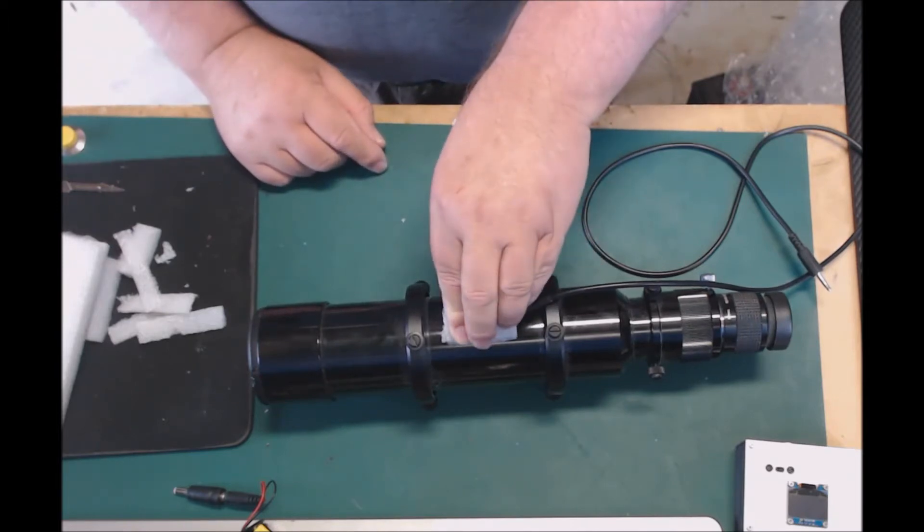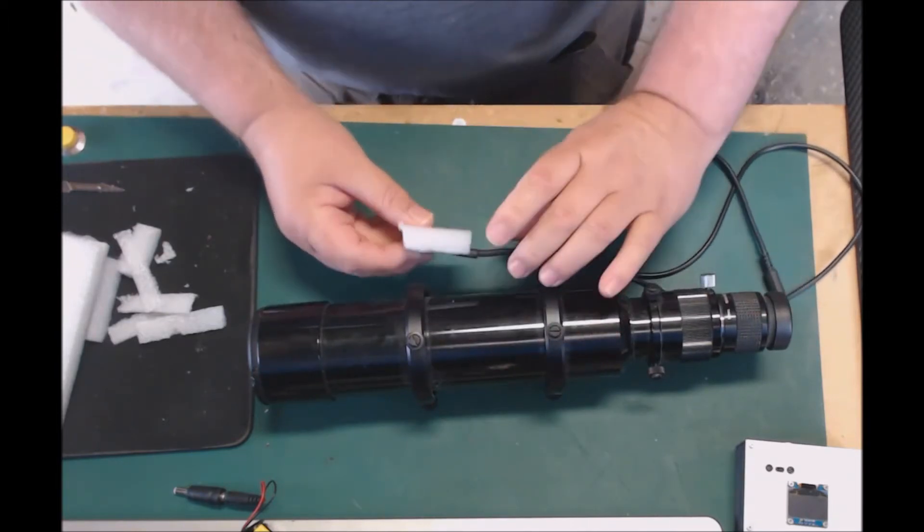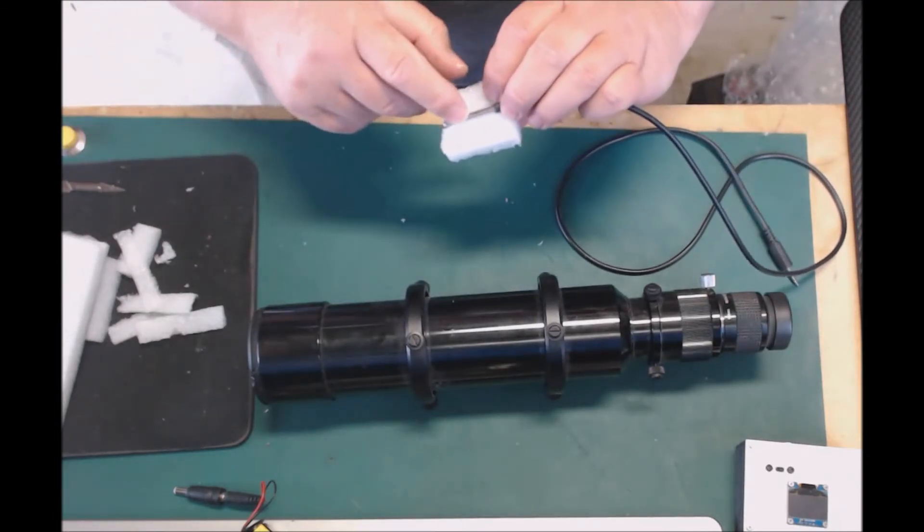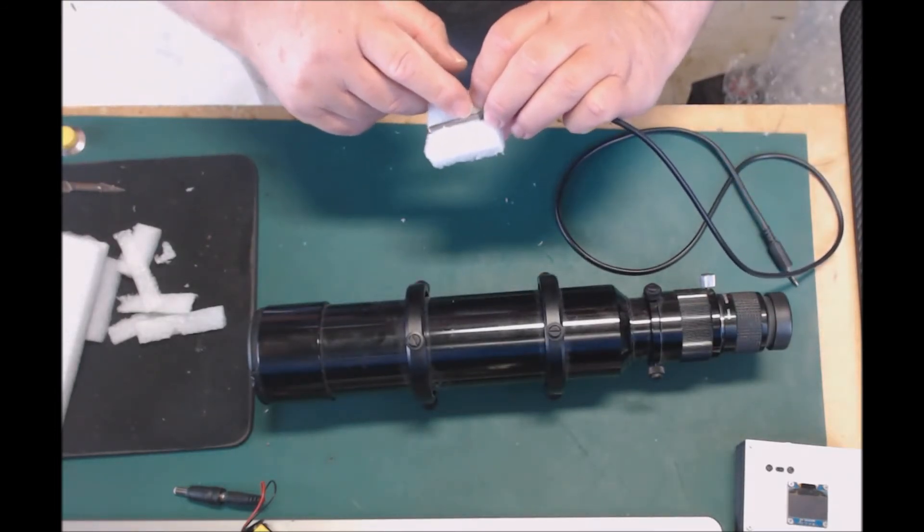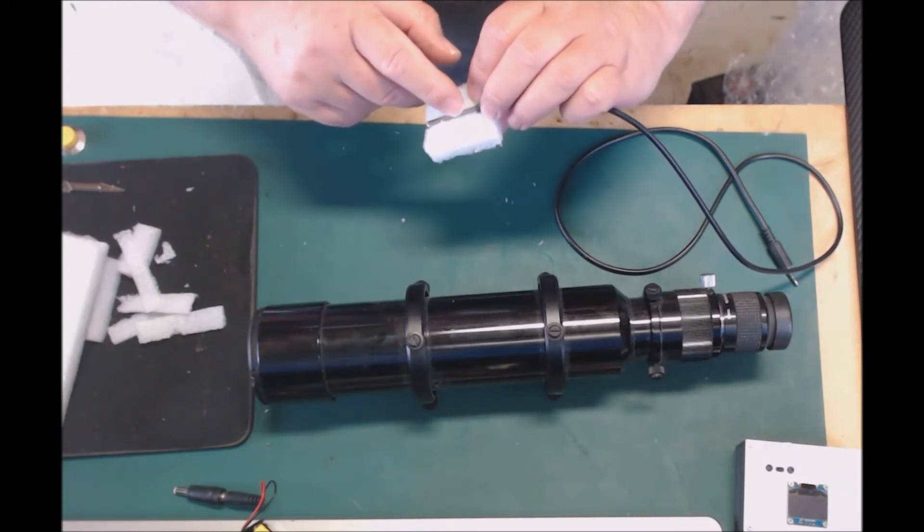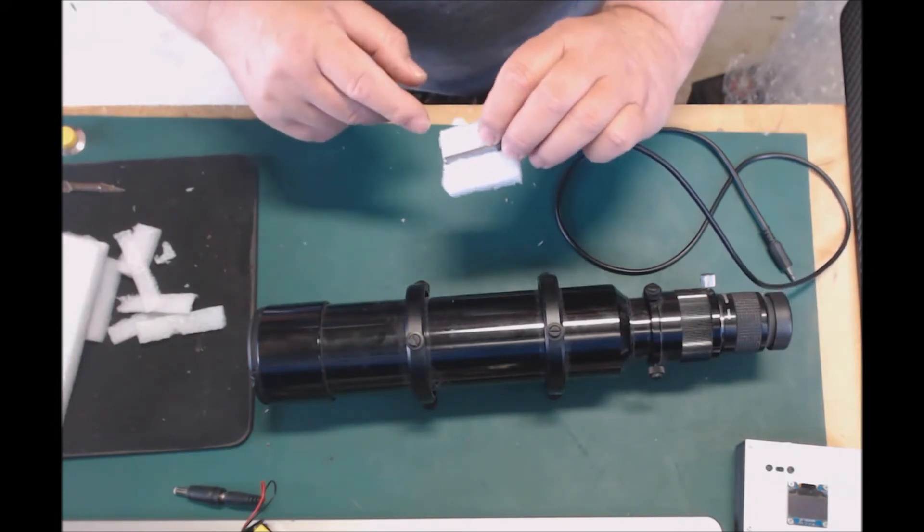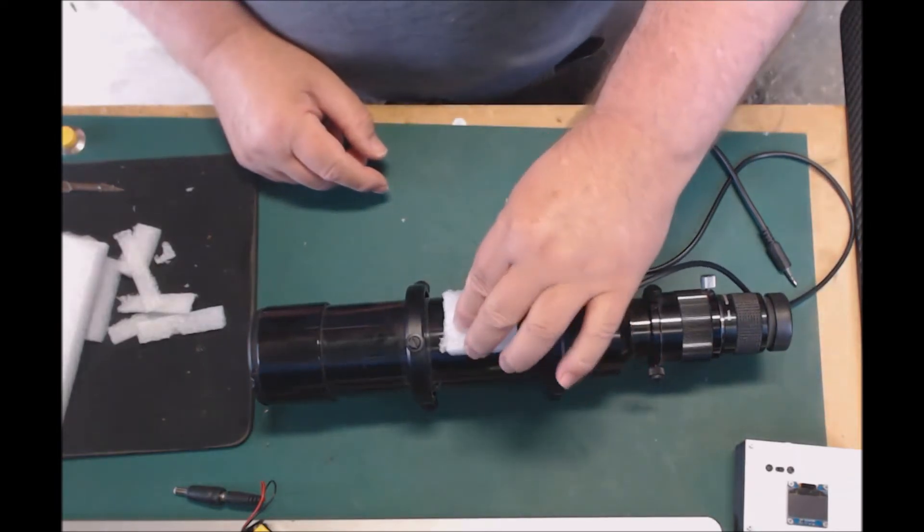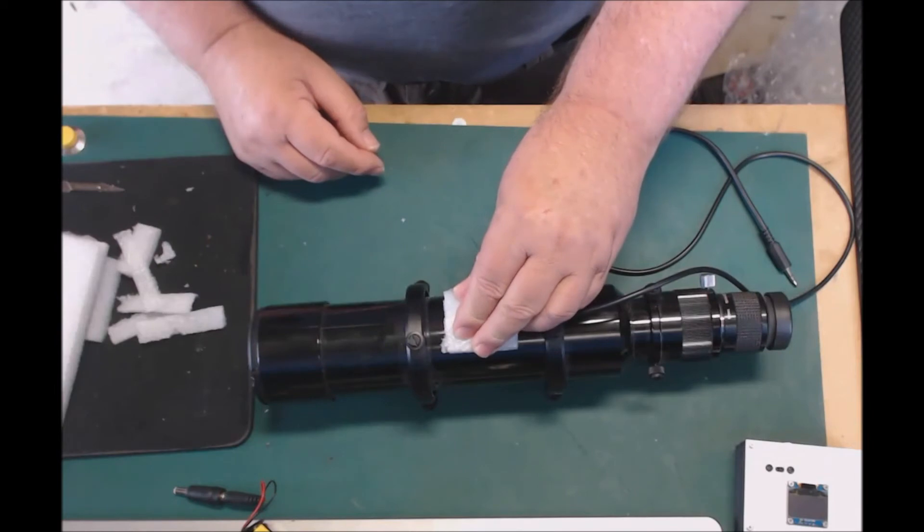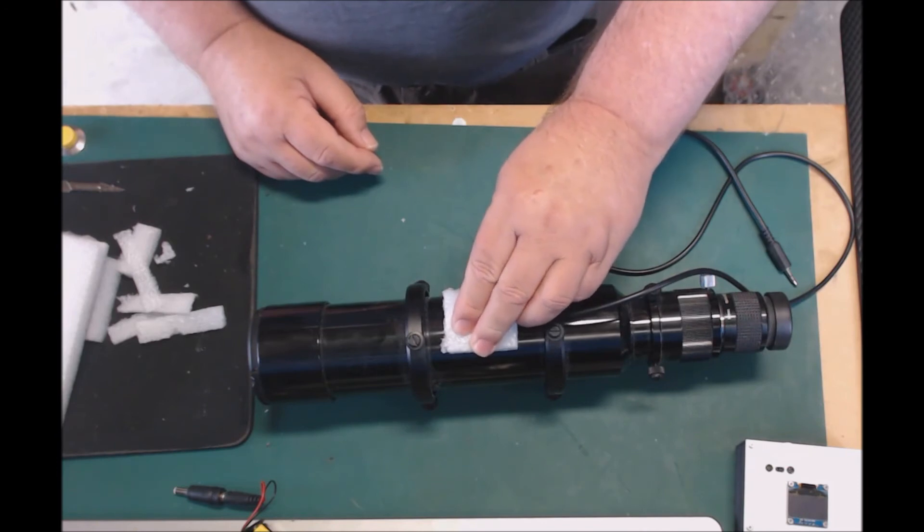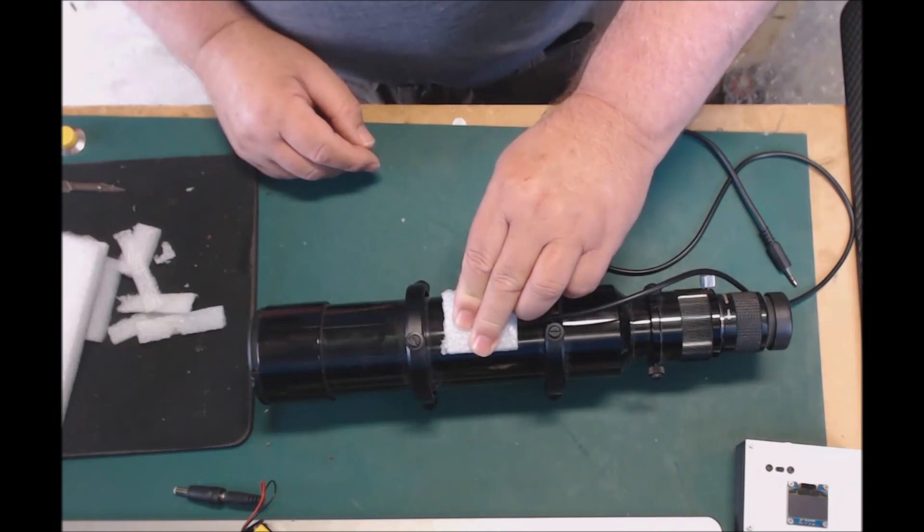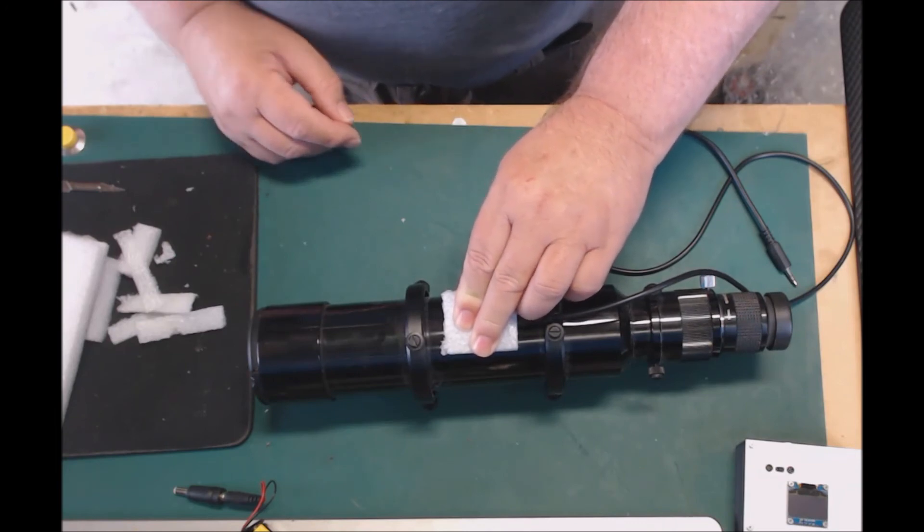What I like to do is put a bit of that heat transfer paste that they use on CPUs, so that there's a good contact between the tube itself and the temperature probe which is going to go to the focuser. Then I just secure that down with a plastic tie or something like that, and that holds it in place. That's going to be sufficient for the temperature compensation. So that's the first part.